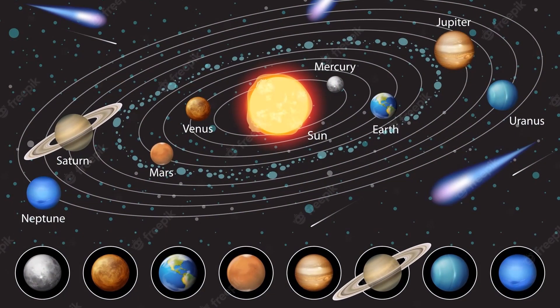This is our solar system. It has eight planets which orbit the Sun. This includes Earth where we live in.